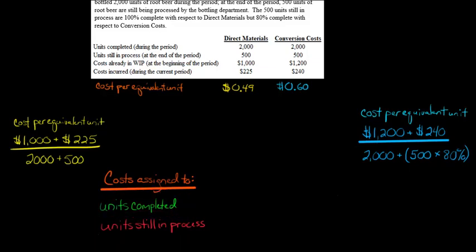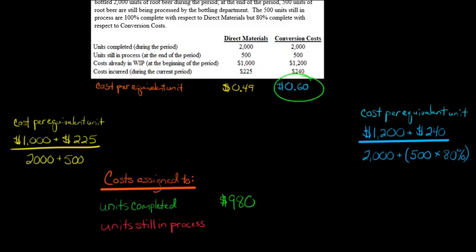Let's start assigning these costs. For the units that are completed, we'll start with direct materials: 2,000 times 49 cents — that's going to be $980. And then with the cost per equivalent unit for conversion costs, for the ones that were completed, we have 2,000 times 60 cents — that's going to be $1,200.